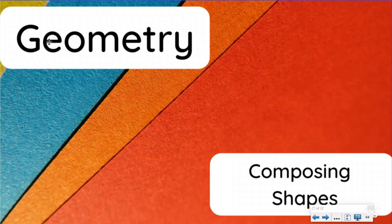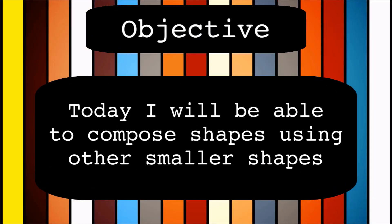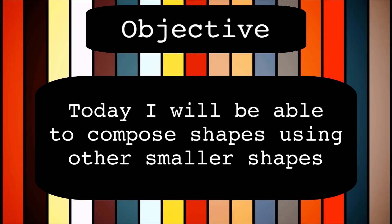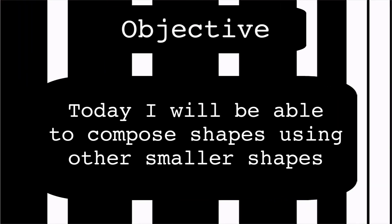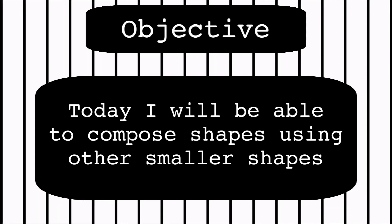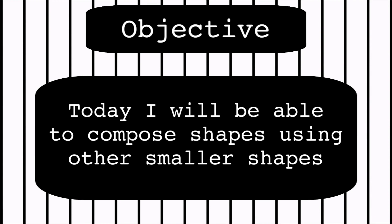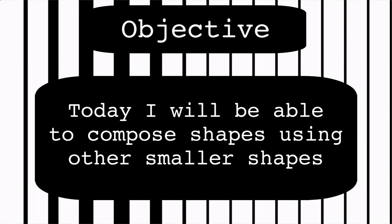What up everybody? Instructor Beats back again talking about composing shapes. Our objective today: I will be able to compose shapes using other smaller shapes. Last lesson we decomposed shapes, broke them apart into smaller pieces. Today we're doing the exact opposite - taking those smaller pieces and putting them together to make a larger shape.